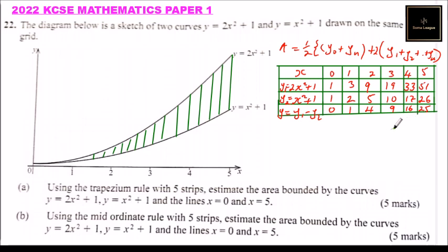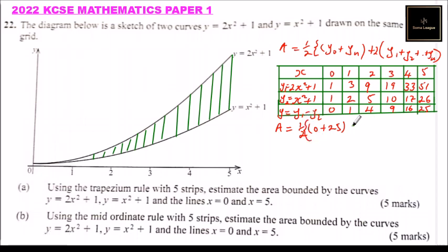Now we apply the trapezium rule. Area equals one half, multiplied by the bracket: first and last ordinates, which are 0 plus 25, plus 2 times the sum of the intermediate ordinates: 1 plus 4 plus 9 plus 16.